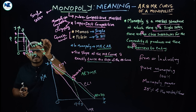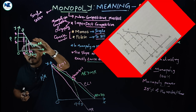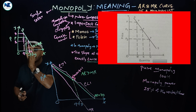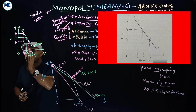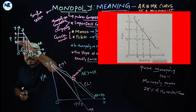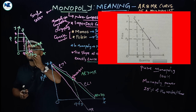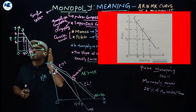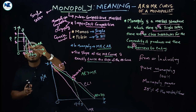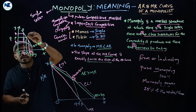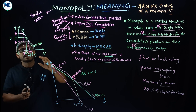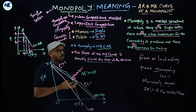Average revenue is equal to the demand curve. When price increases, the level of output falls; when price declines, demand — meaning output — increases. This gives us a downward sloping, negatively sloped demand curve.